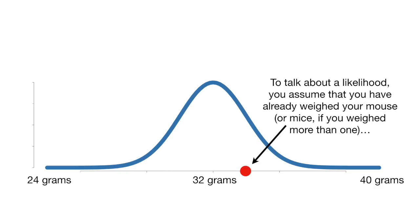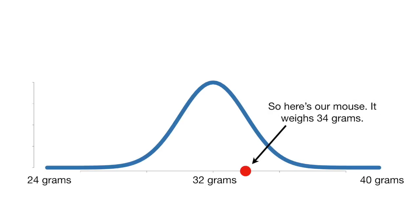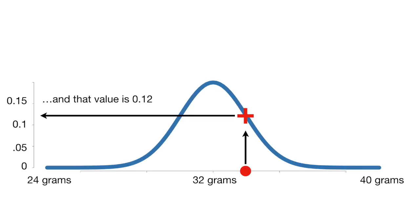To talk about likelihood, you assume that you have already weighed your mouse, or mice, if you have weighed more than one. So here's our mouse. It weighs 34 grams. The likelihood of weighing a 34 gram mouse is this point on the curve, and that value is 0.12.